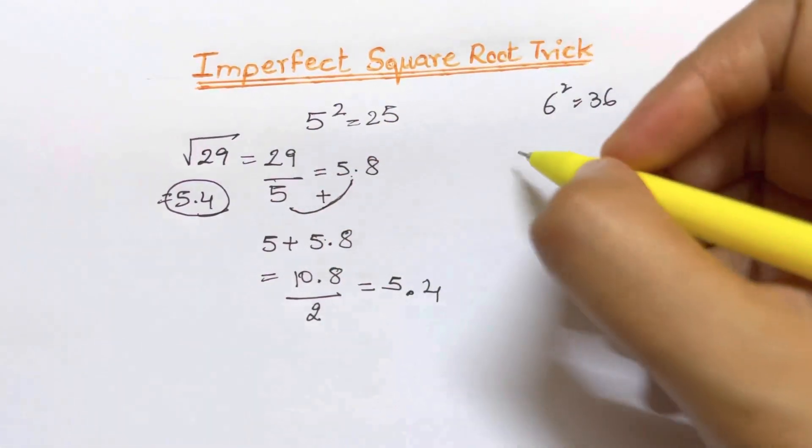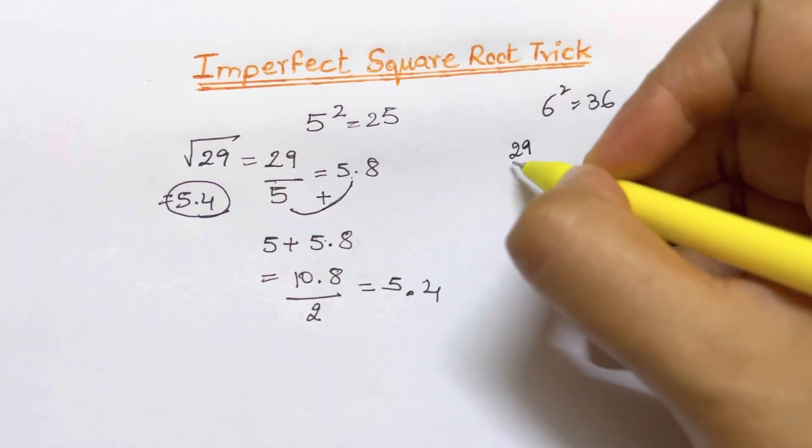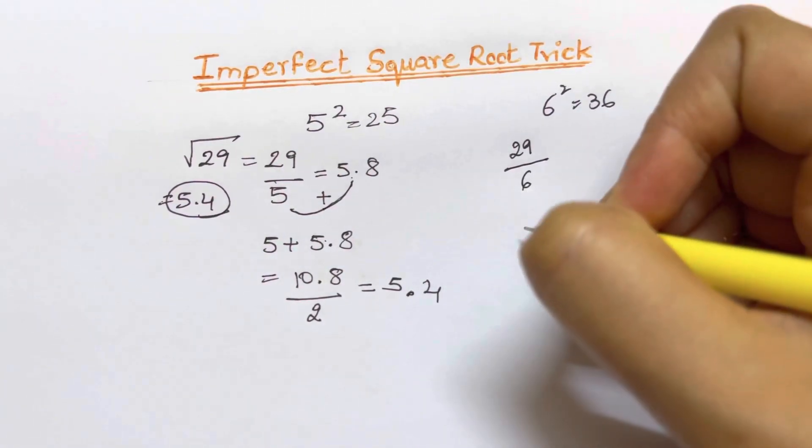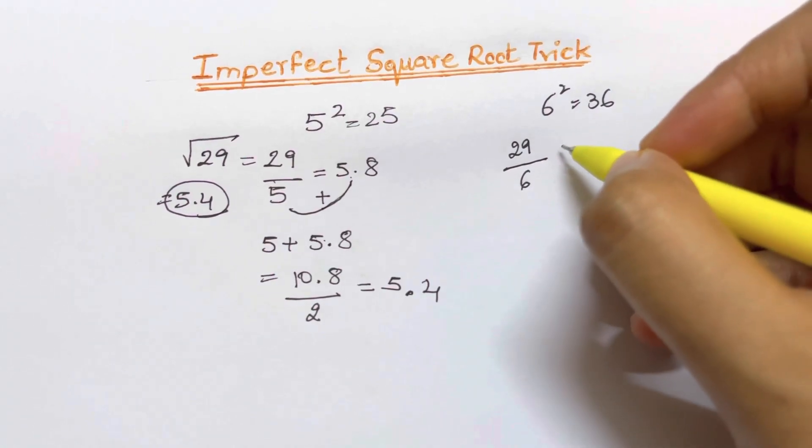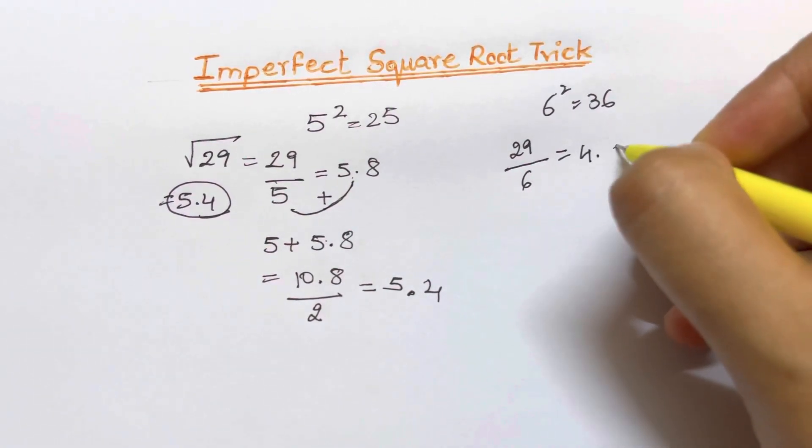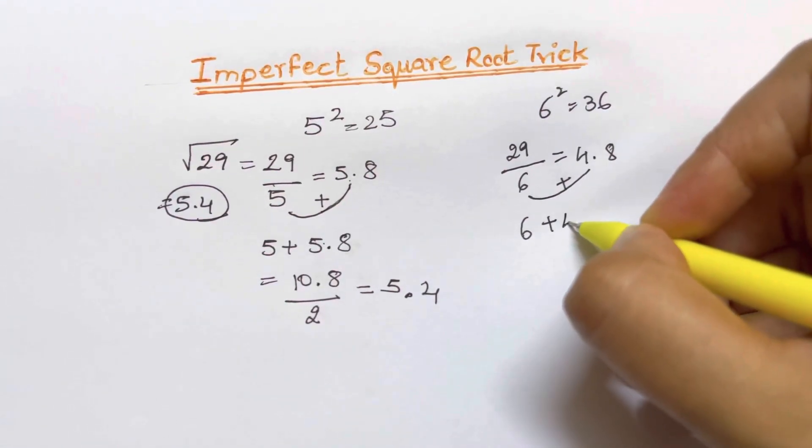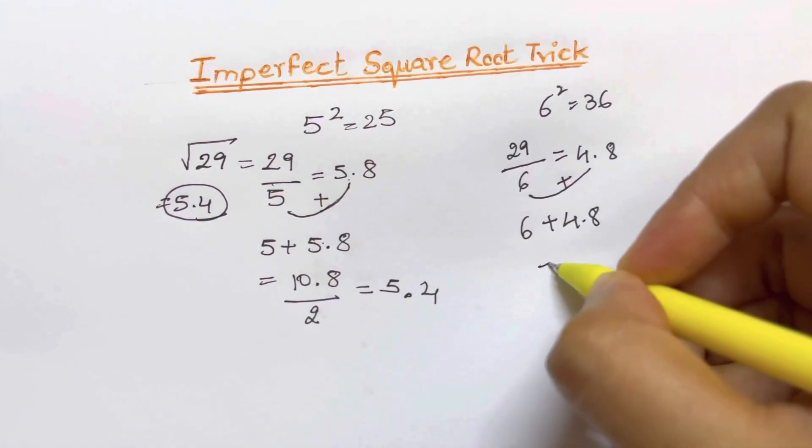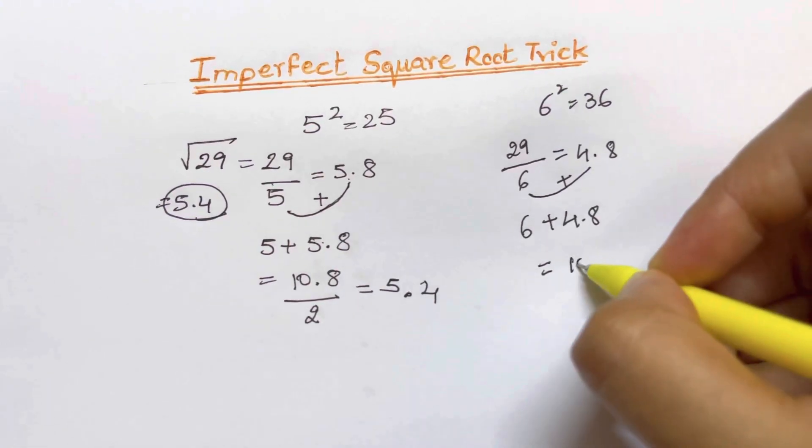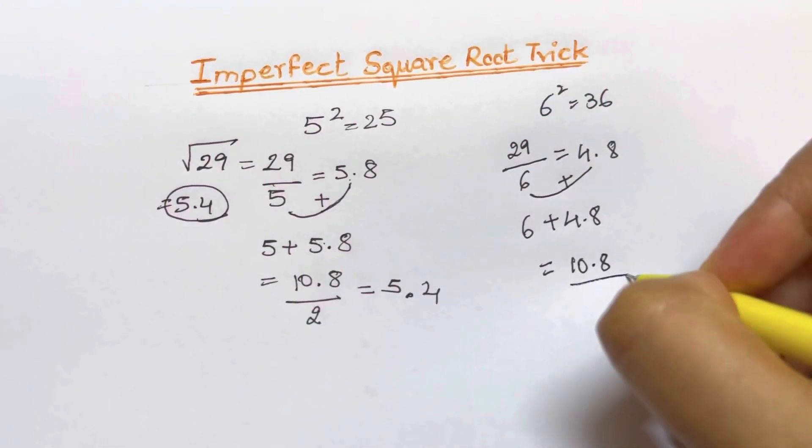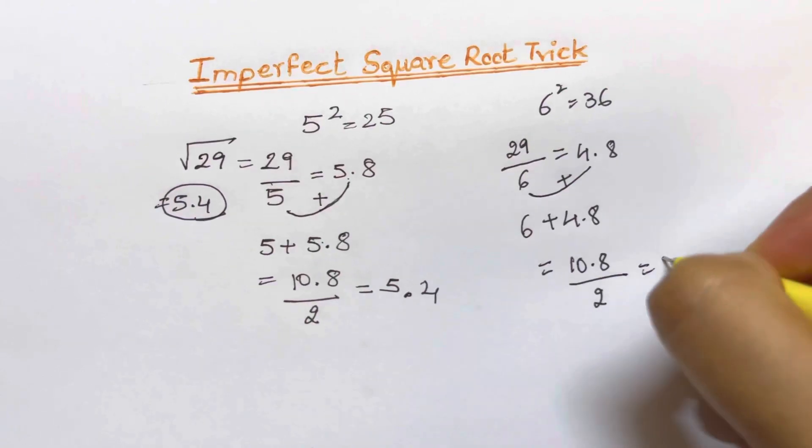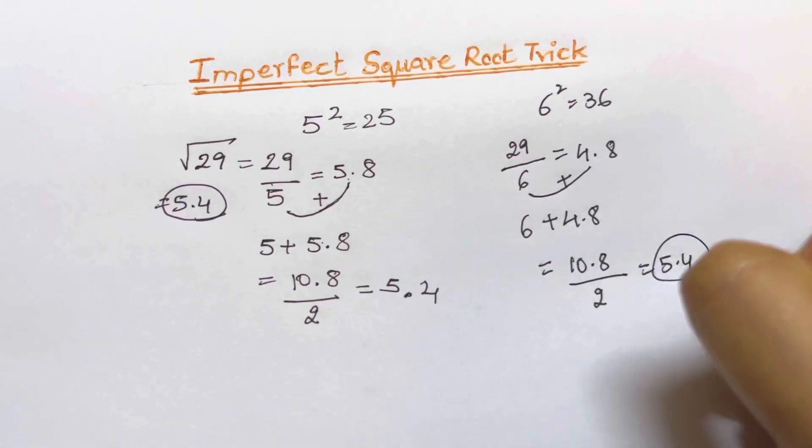We'll do the same thing. Write down 29 divided by 6. 29 divided by 6 will give you 4.8. Now you need to add these two numbers. 6 plus 4.8 will give you again the same thing, that's 10.8. And the last step, divide it by 2, will give you again 5.4. That's your answer.